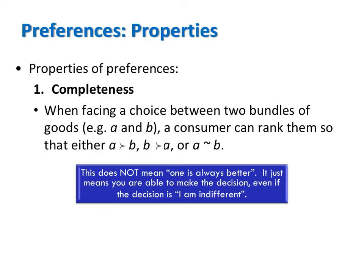There are three properties of preferences that we usually assume hold true. The first two we will always assume hold true in this class, and the third we will sometimes relax. The first is called completeness. Completeness says that when facing a choice between two bundles of goods, a consumer can rank them so that either they strictly prefer A to B, strictly prefer B to A, or they are indifferent between A and B. Completeness does not mean one is always better — it just means you are able to rank two bundles. You never say 'I don't know how I feel'; you might say 'I know how I feel and I like them equally well.'